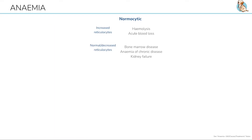Normocytic anemia is where the size of the red cells are within normal range, but there is a decreased amount of them circulating in the blood. The average lifespan of a red cell is around 120 days, so for some reason they aren't lasting that long, or they aren't being made enough.